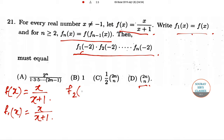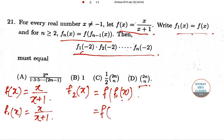Now we have to find out f2(x) first. f2(x) equals f of f1(x). As we have fn(x) equal to f of f(n minus 1) of x when n is greater than 2. So we are getting f of f1(x) equals f of x by x plus 1.